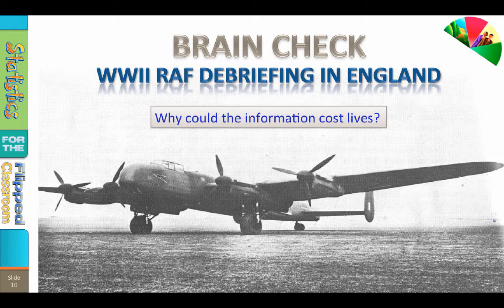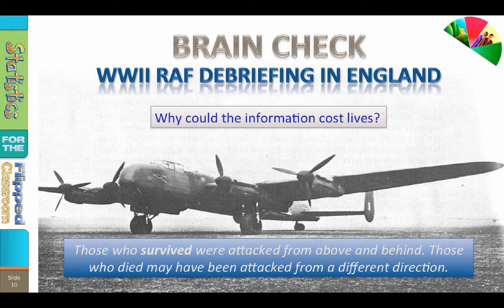But as the corporal is leaving the dimly lit Quonset hut, a hand reaches from the shadows and says, "Stop! That information may cost lives." So what is wrong with that information? This is an example of sampling error — the lieutenant is asking the wrong people. What does he really want to know? From which direction did the fatal attacks come? But all we know is that those who survived were attacked from above and behind. Those who died may have been attacked from a different direction, which is why those attacks were fatal.